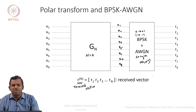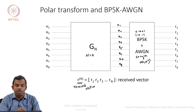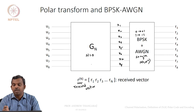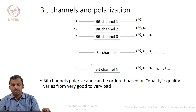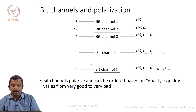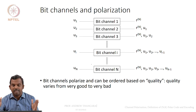This picture is straightforward — you have bits coming in, you do the polar transform, which you can do for any N. I have shown it for N equals 8, but you can do it for N equals 1024 as well: 1024 bits coming in, hit with the polar transform, outputs go through BPSK AWGN, and you get a received vector. Now, what is the effect of this from a polarization point of view?